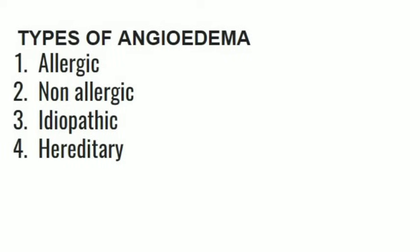Generally, there are four types of angioedema: allergic angioedema, non-allergic angioedema, idiopathic angioedema, and hereditary angioedema. We will now discuss hereditary angioedema.